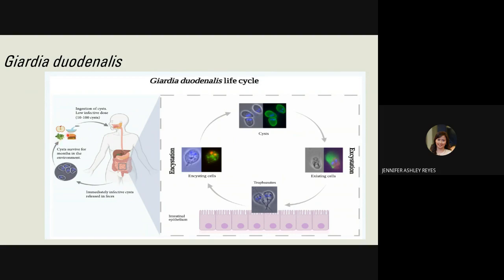When ingested, Giardia cysts undergo excystation and trophozoites emerge, attaching to intestinal epithelial cells of the upper small intestine. They replicate extracellularly there, then complete the life cycle by forming cysts through encystation in the lower intestinal region. Replication of Giardia lamblia can result in profuse, fatty diarrhea in infected individuals, though asymptomatic cases are also possible — patients sometimes discover infection only through routine stool exam with no symptoms.